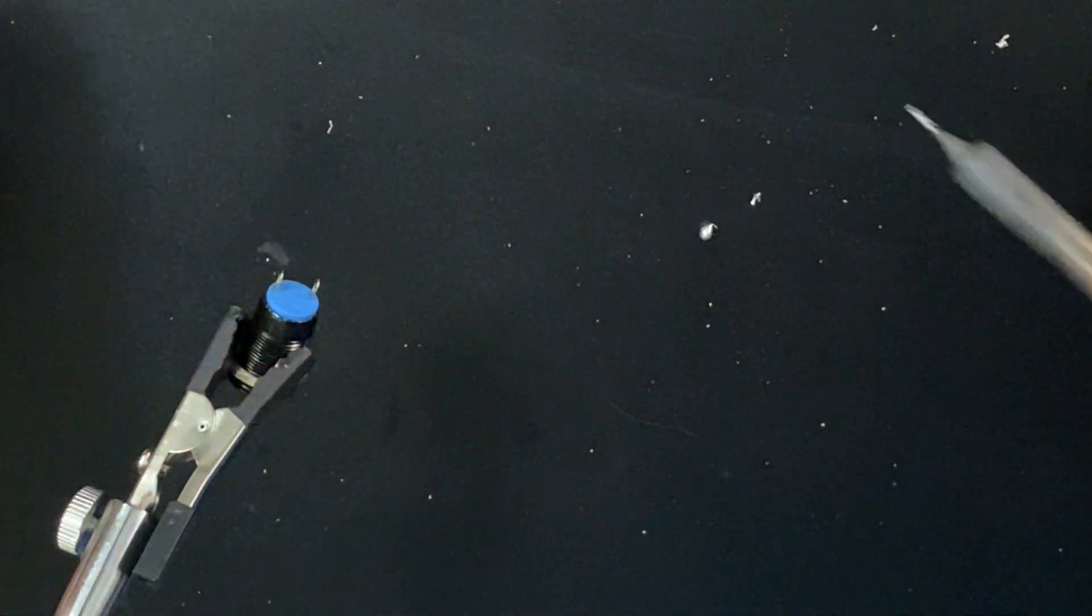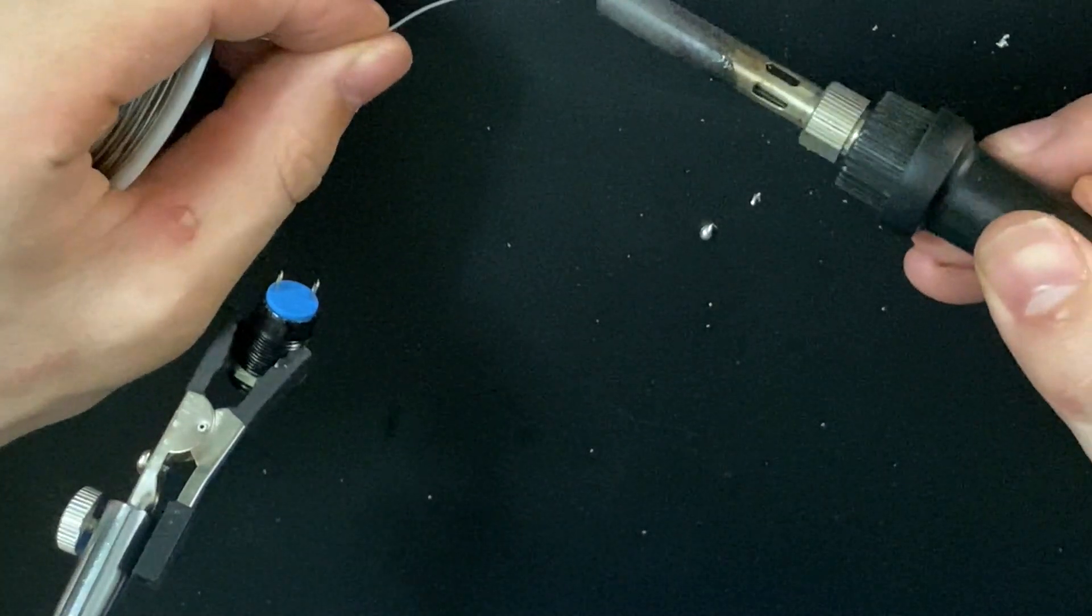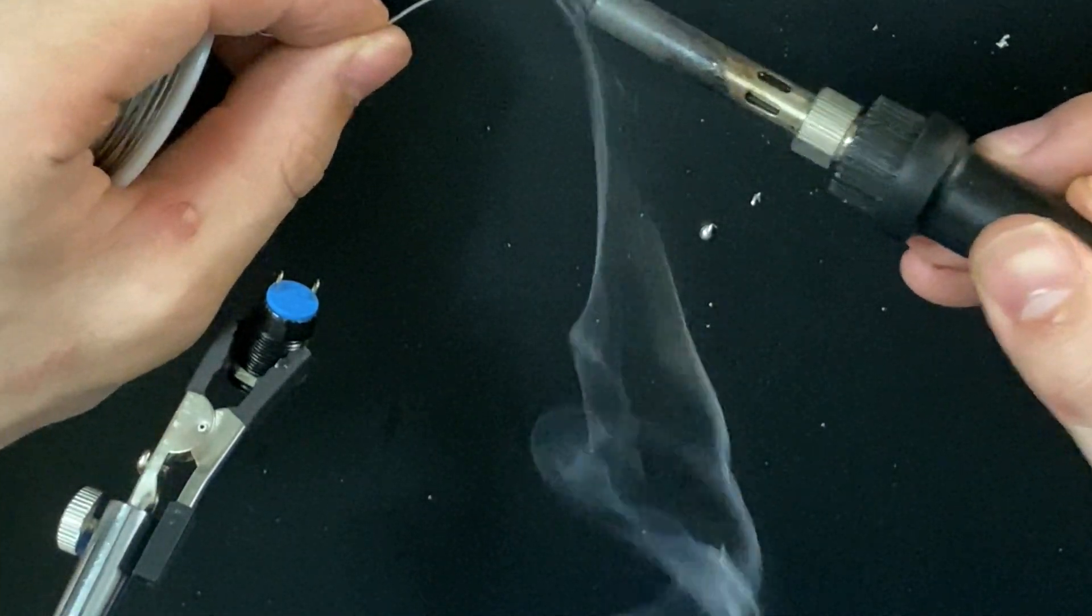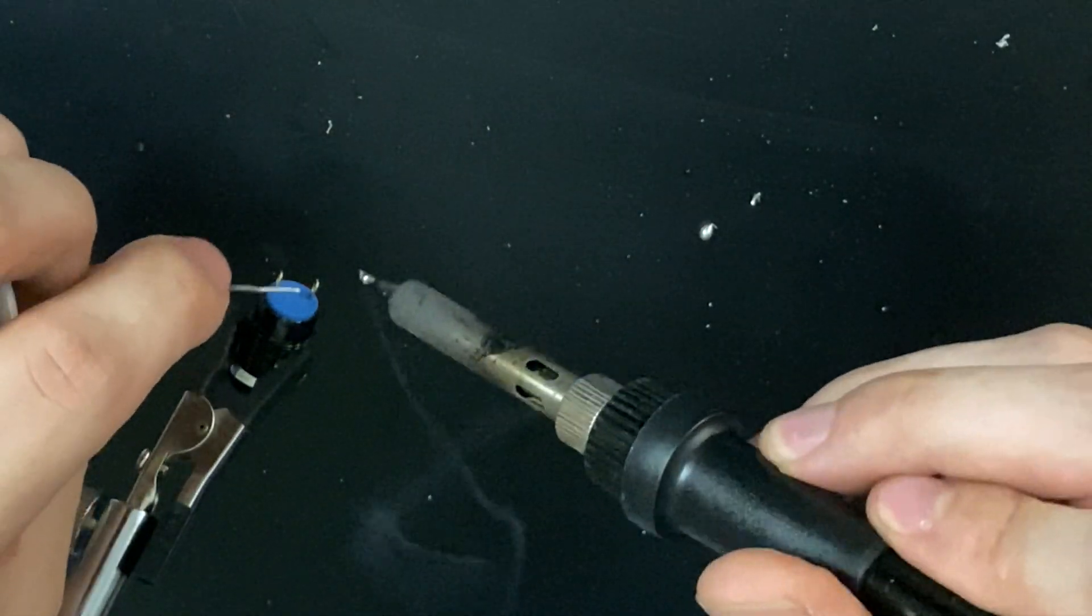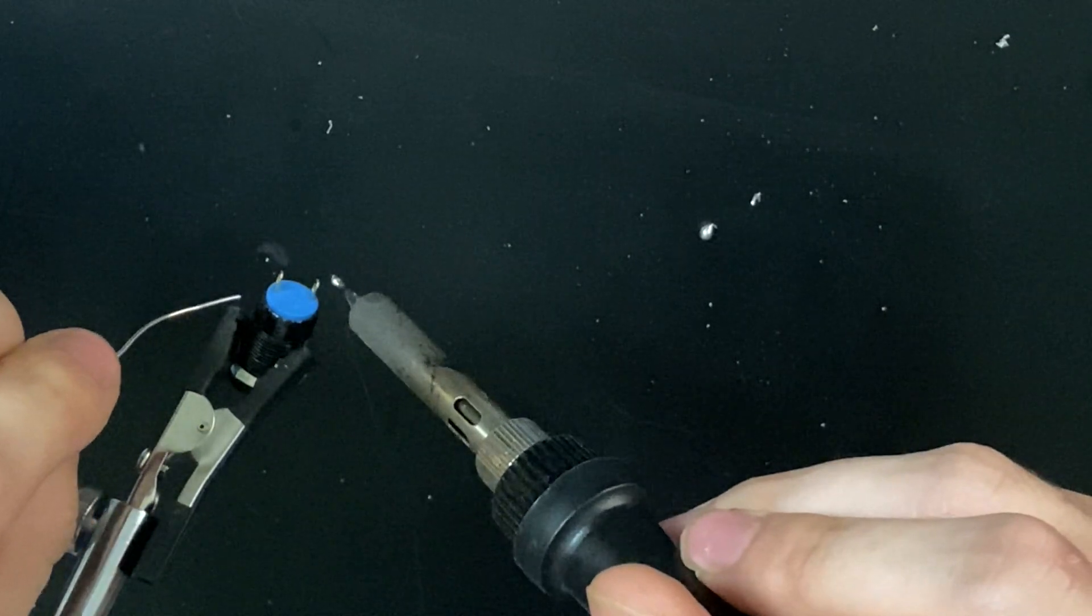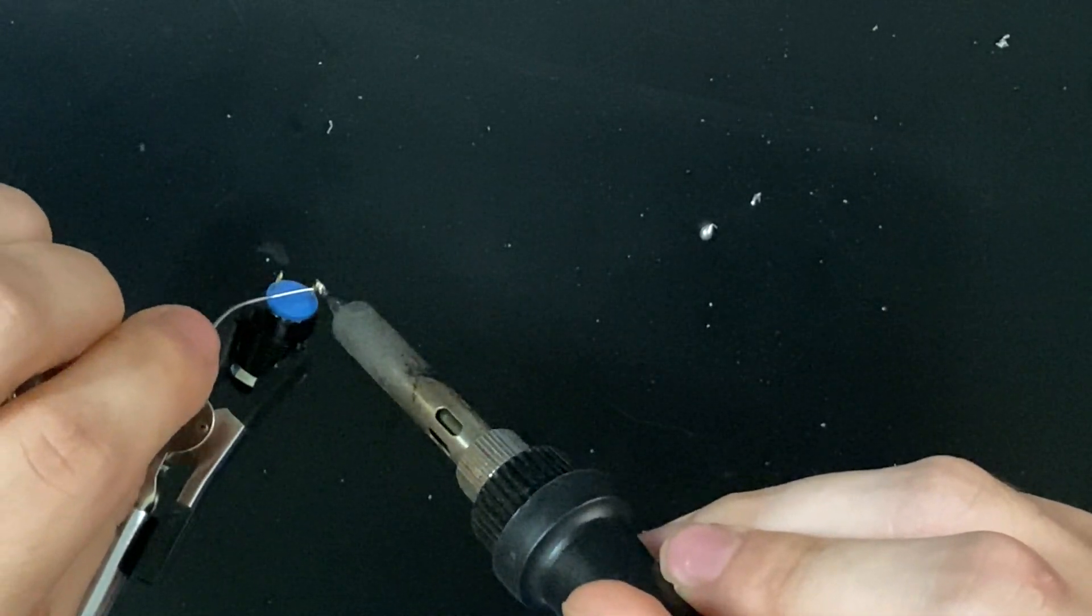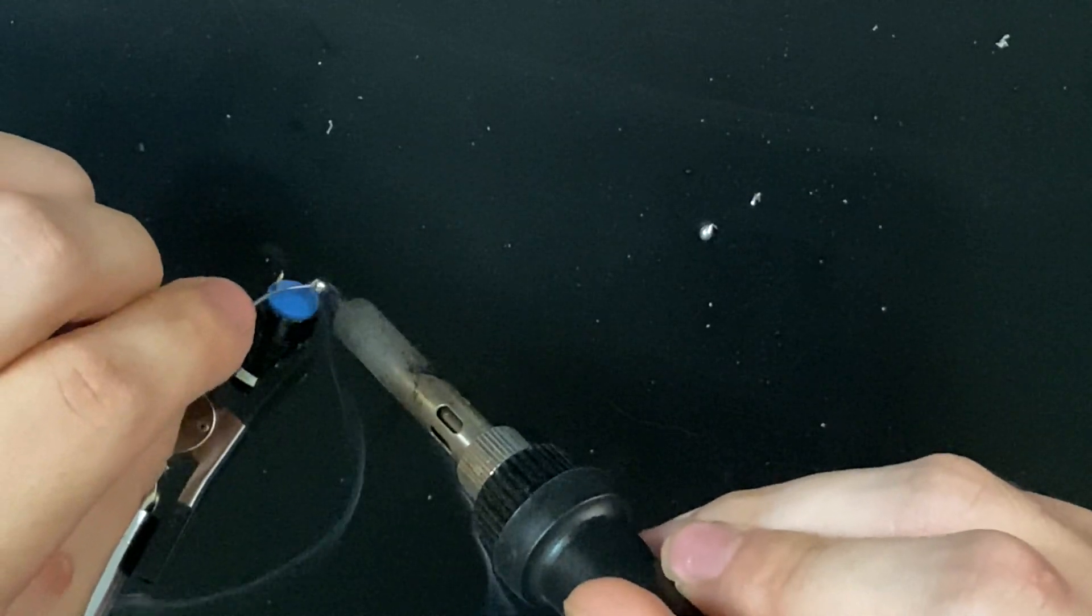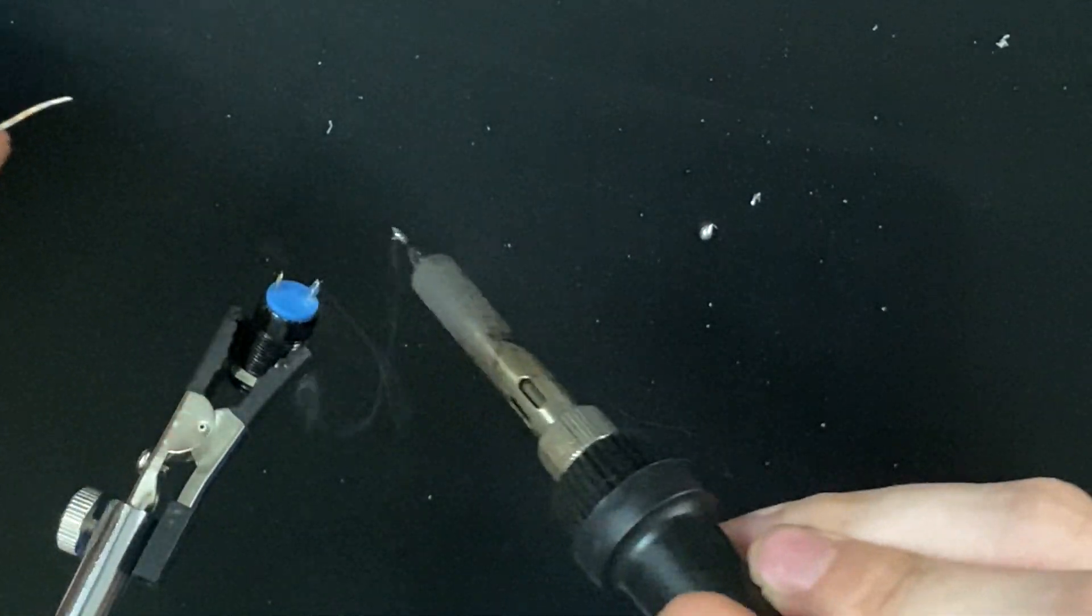Soldering to a switch is very similar. So you want to make sure your iron is hot. Get some solder on your iron. You're going to pre-tin the switch tab by first heating it up with the iron and the solder, and then carefully adding the solder to it. Then you have a pre-tinned switch tab.